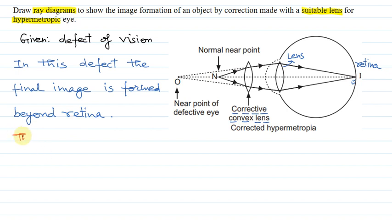The convex lens converges light rays. So obviously suitable focal length lens is used.